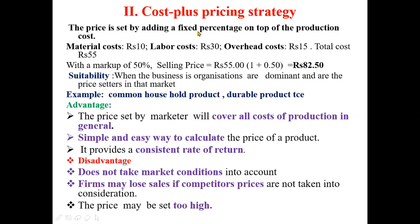Cost plus pricing strategy may be simple but will not always work — it works when the marketers are dominant in the market and are the price setters. Advantages: the price set by the marketers covers all the cost of production, it is a very simple and easy way to calculate the price, and it provides a consistent rate of return since a definite amount of profit is added. Disadvantages: it does not take market conditions into account. The firm may lose sales if competitor prices are not considered, and sometimes the prices set are also very high.